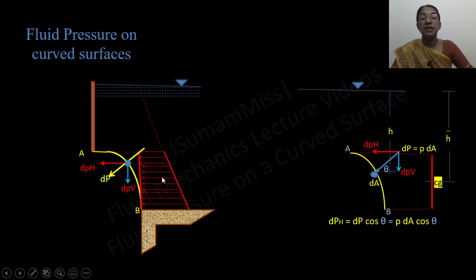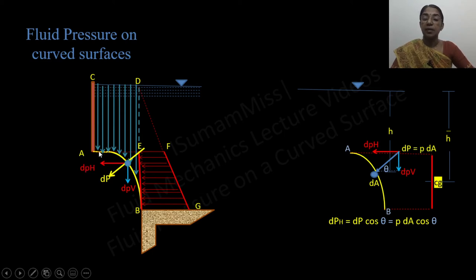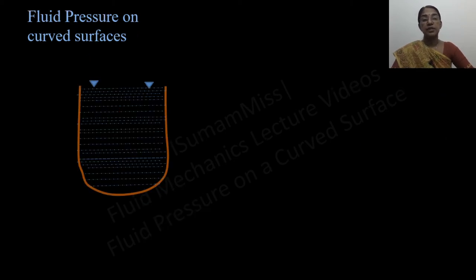The vertical component of the resultant hydrostatic force is equal to the weight of the liquid column acting over the curved surface AB — that is, the weight of the liquid prism ABEPca above the curved surface. The determination of the weight of this prism and its center of gravity is simplified by dividing it into convenient parts.